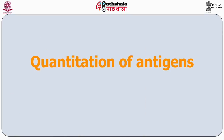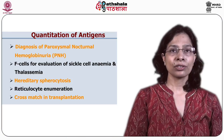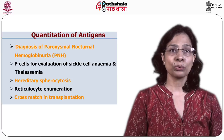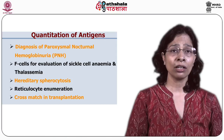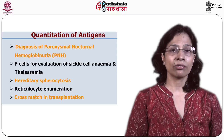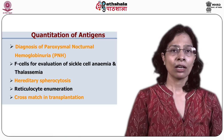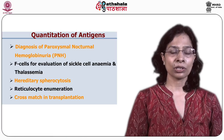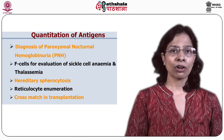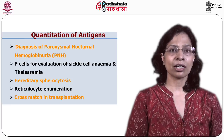We will now discuss applications based on quantitation of antigens. Quantitation of antigens on the cell surface using flow cytometry has been used for the diagnosis of paroxysmal nocturnal hemoglobinuria, identification of fetal cells and F cells in evaluation of sickle cell anemia and thalassemia, diagnosing hereditary spherocytosis, enumerating reticulocytes, and for crossmatch in transplantation.